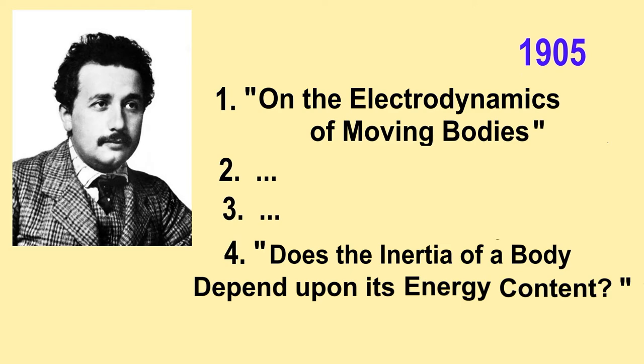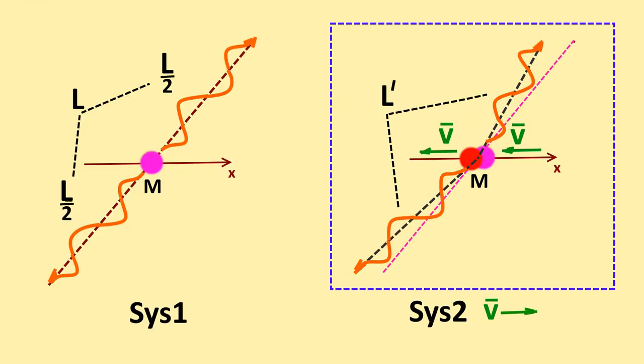First, consider Einstein's derivation. In a thought experiment, a particle of mass M is considered in two inertial systems. The first system is connected with the particle. The second system moves at a speed V, conditionally to the right relative to the particle. The particle moves in it at a speed V to the left. At some moment of time, a particle resting in the first system emits two identical electromagnetic waves in opposite directions, each with an energy of half L. The total energy is equal to L.